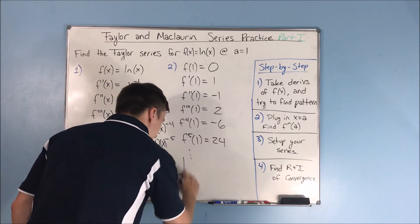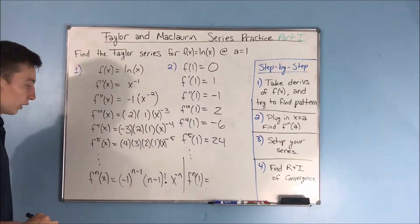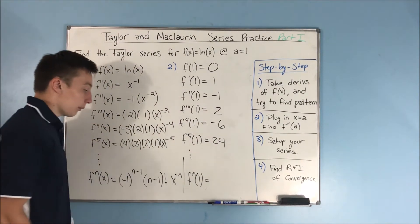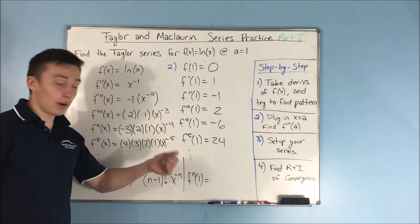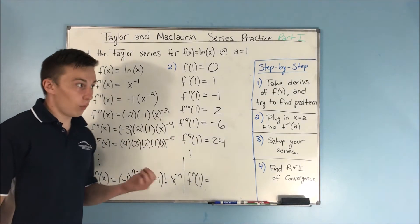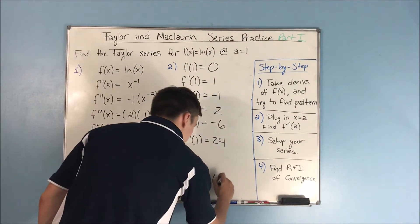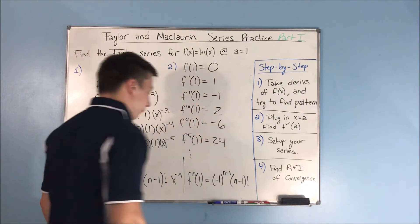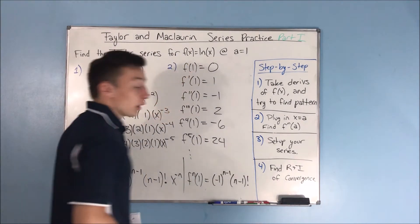Moving on, the nth derivative of f at 1 will give us negative 1 to the n minus 1 times n minus 1 factorial — because x to the negative n evaluated at 1 doesn't change anything, since 1 to any power is 1. So we have negative 1 to the n minus 1 times n minus 1 factorial. This is what we can now plug in to set up our series.